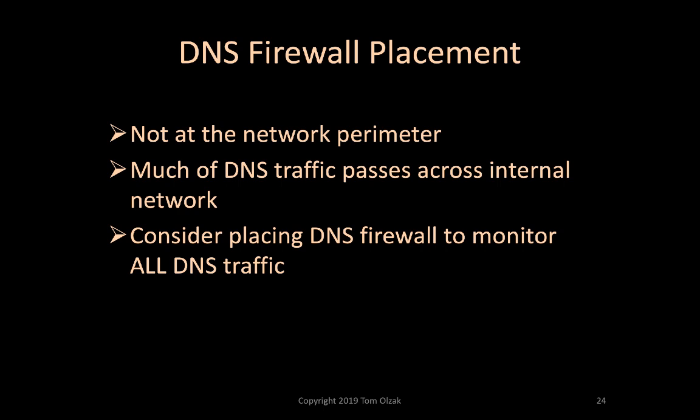We usually place firewalls at the network perimeter. However, this is not considered by many security professionals to be the correct location for DNS firewalls. Much, if not most, of an organization's DNS traffic is used to find on-premises resources. For example, Windows uses DNS to locate a domain controller during user login. MA also use DNS to move laterally across an infected network to reach additional targets. Organizations should consider placing DNS firewalls so that they monitor both internal and internet-directed DNS traffic.